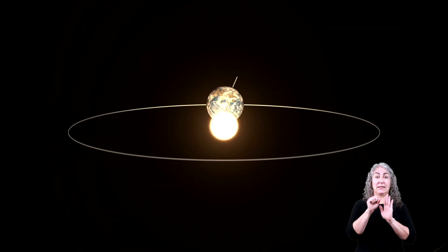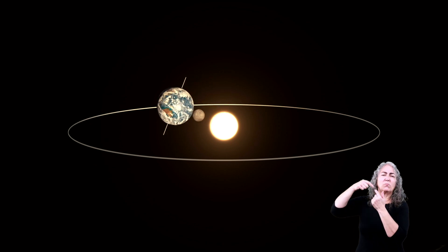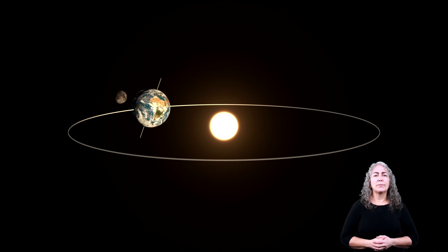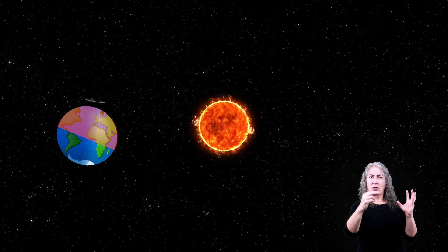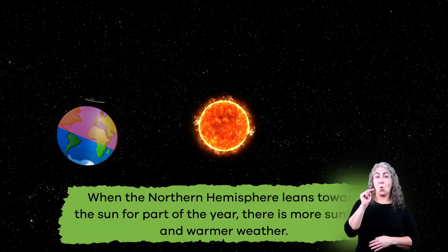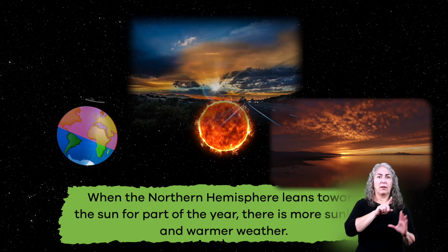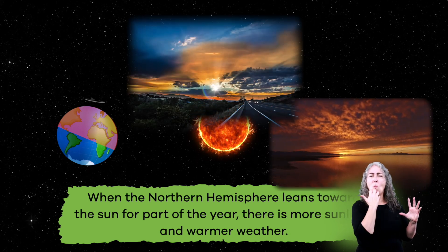Remember when we mentioned that seasons are related to the earth's rotation? Now we are going to show you how. When the earth rotates around the sun, one half, or hemisphere, leans toward the sun, and the other half leans away. Let's look at the Northern Hemisphere, or top half of the earth, as an example. When the Northern Hemisphere leans toward the sun for part of the year, there is more sunlight and warmer weather.